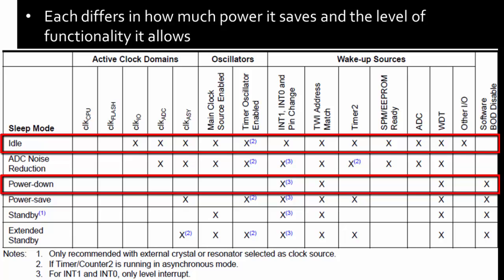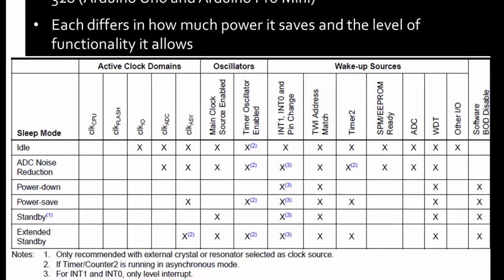So power down is what you would use if you're not doing anything and you just want your Arduino to go to sleep and use as little power as possible. This table you're looking at is from the data sheet. I'm going to show an example using idle and power down. I'm not going to cover all of them, but you can get their details from the data sheet.